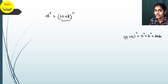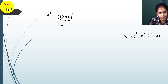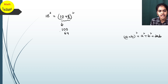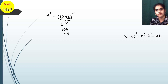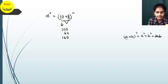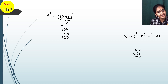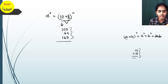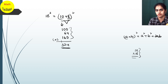So here, firstly I'll write what is 10² — it is 100. What is 8²? It is 64. Then 10 × 8 = 80, and 2 times 80 is 160. You may feel this is lengthy, but here there are no chances of making a mistake. The final answer — simply add all of these: 100 + 64 + 160 = 324.